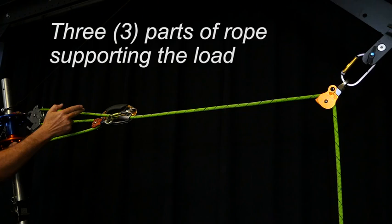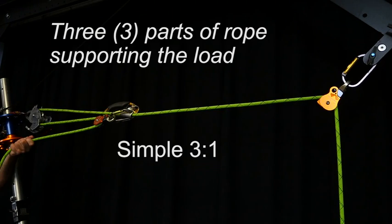If we consider this as the load, we have three parts of rope supporting that load. So we have a simple three to one.